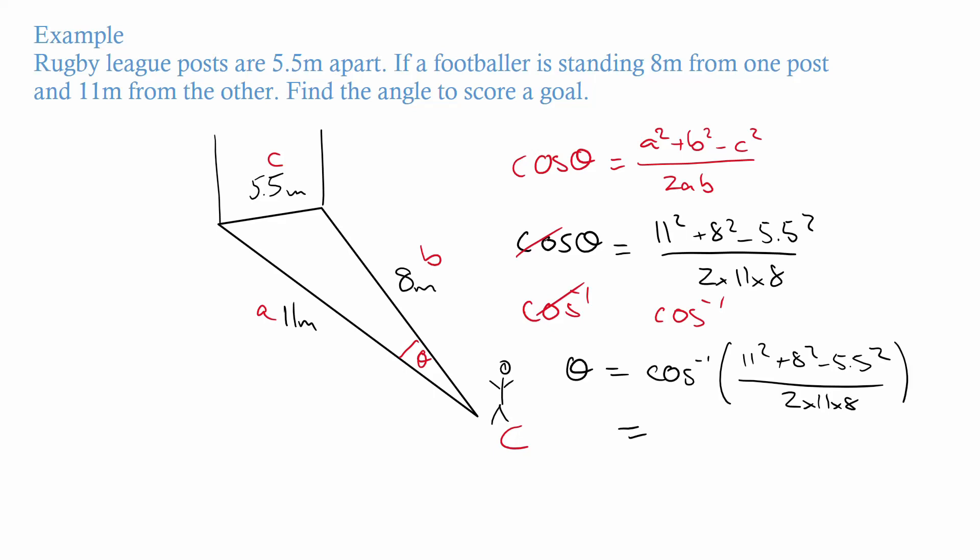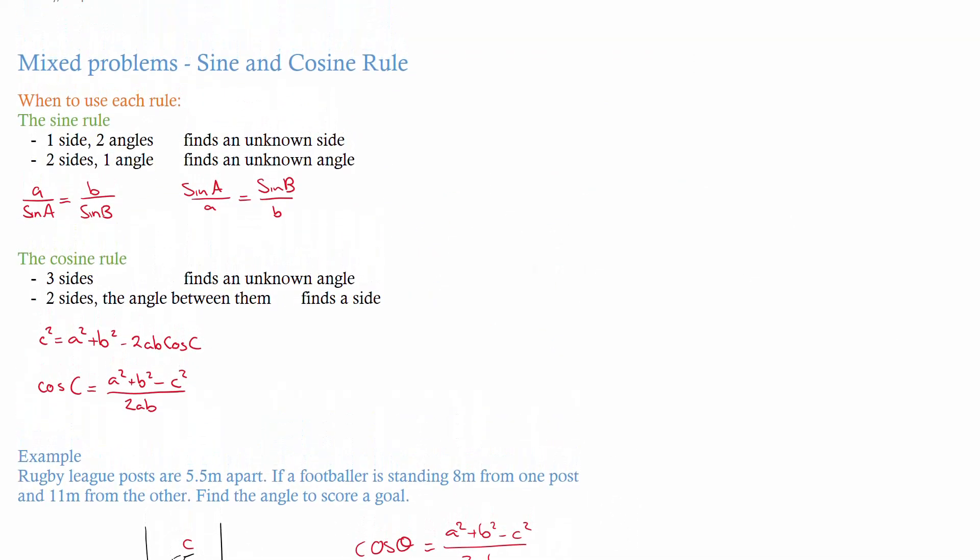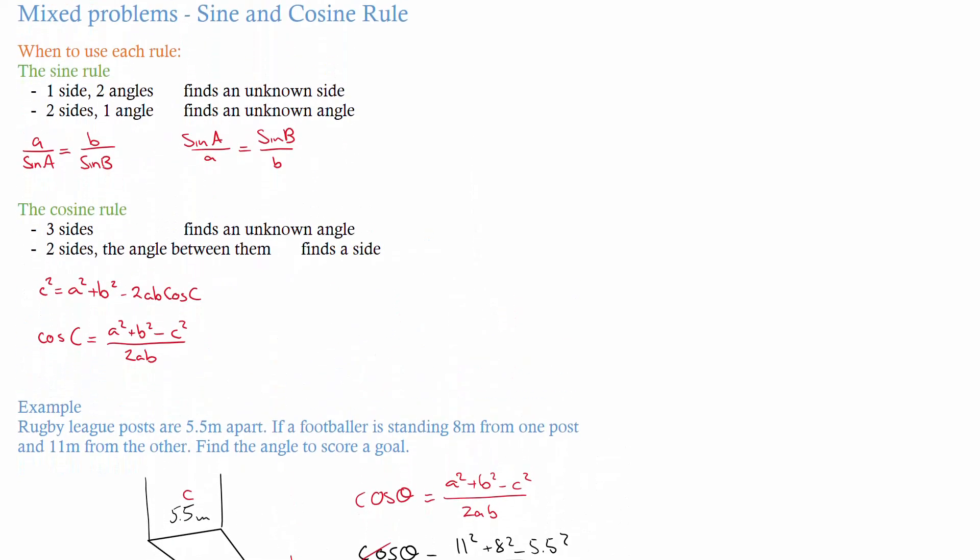With these type of problems it's important to draw something to start with, identify what you're given. In our example here we were given three sides, and then we go okay, well which rule do we use when we have three sides? We use the cosine rule. So again, draw something, look at what you've been given, and then identify the rule you need to use to find what you need.